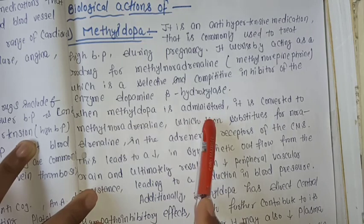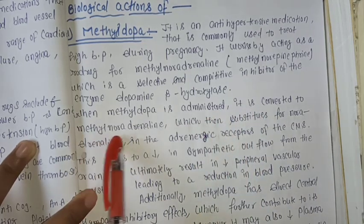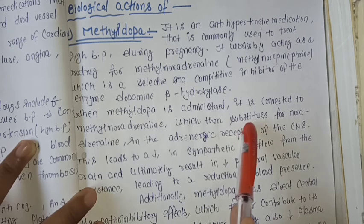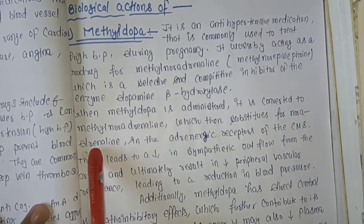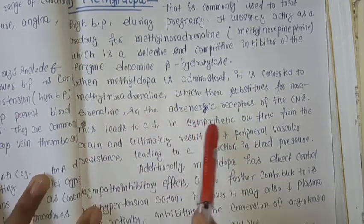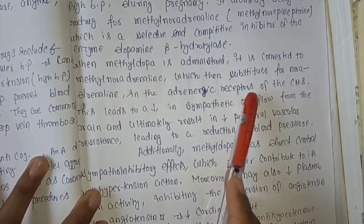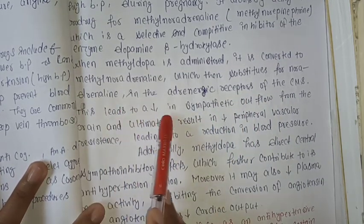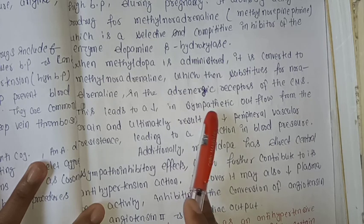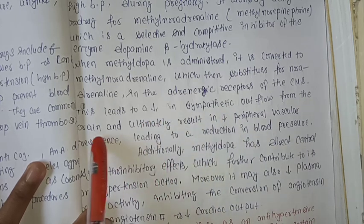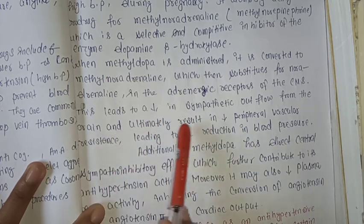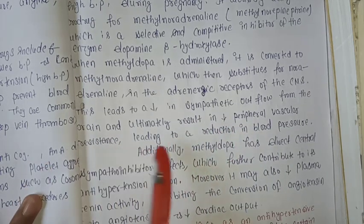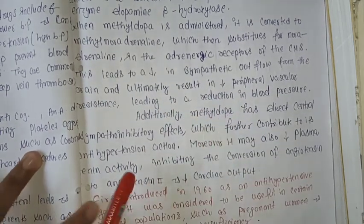When methyldopa is administered, it is converted to methyl-noradrenaline, which then substitutes for noradrenaline in adrenergic receptors of the CNS. This leads to a decrease in sympathetic outflow from the brain, and ultimately results in decreased peripheral vascular resistance, leading to a reduction in blood pressure.